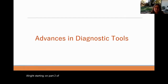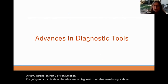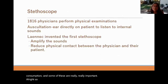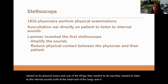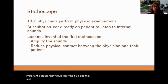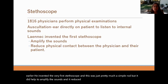Now let's talk about advances in diagnostic tools brought about by consumption. The stethoscope: in 1816 and the early 1800s, physicians started doing physical exams and wanted to listen to internal sounds of the heart and lungs. In tuberculosis this was very important because they could hear the fluid and lung sounds associated with it. Laennec invented the very first stethoscope — a simple rod — that helped amplify sounds and reduced physical contact between physician and patient, since physicians would previously just place their ear directly on the patient's chest.